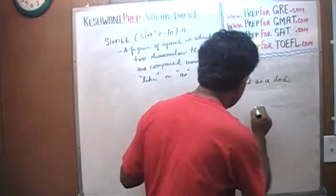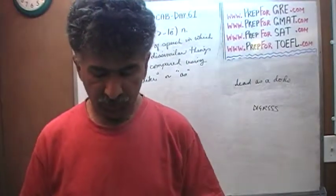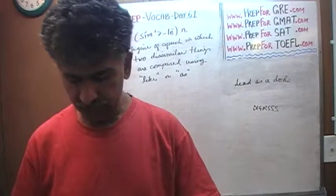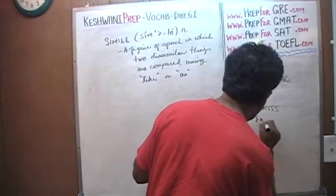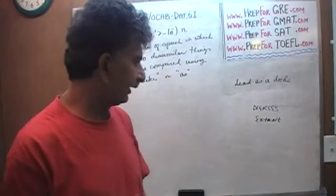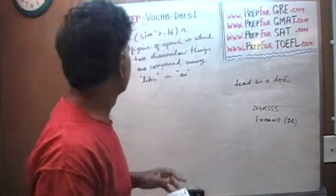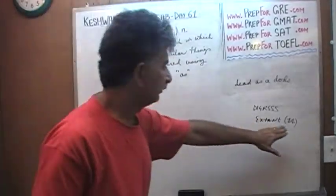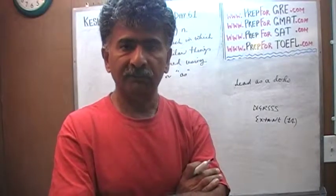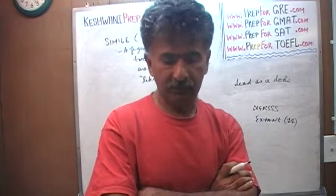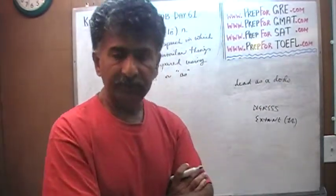Let me digress for a second. I said the dodo is a bird which 'no longer exists' — three words. The word I actually wanted to use was 'extant' — spelled with an A. Extant is the antonym of extinct. Extinct means something no longer exists; extant means something that does exist. We humans are extant; dinosaurs are extinct. So the dodo is a bird that is not extant — it is extinct. You can look up 'extant' in Keswani prep vocab day 14.